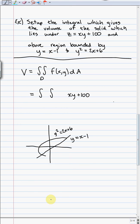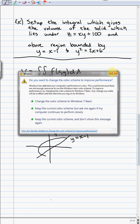If you remember back from when we started 16.1, the first application we had about double integrals is that the double integral over some rectangle gave you the volume underneath your function above that rectangle. The same process will give us the volume underneath any shape above any region on the x, y plane. So if we want to get the volume that lies under z is equal to xy plus 100, well, that's going to be our function, xy plus 100.